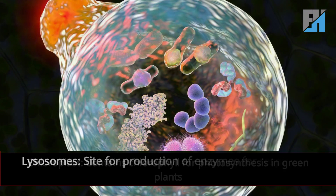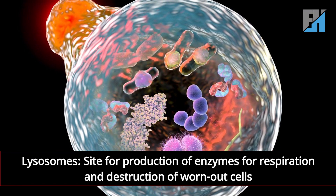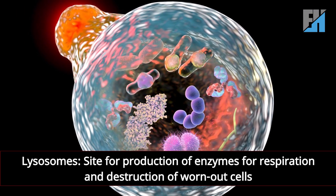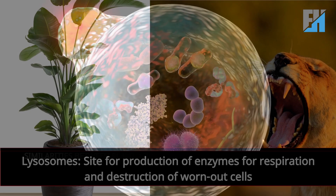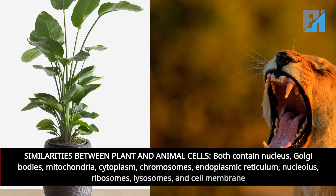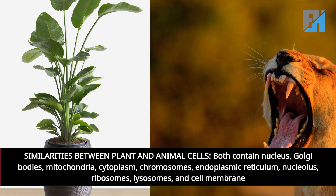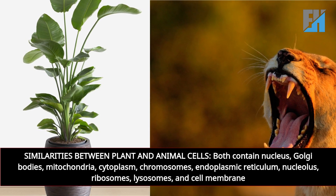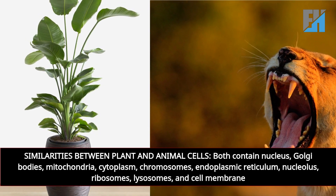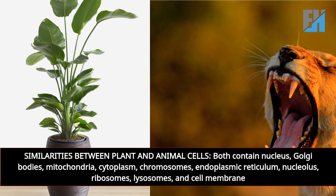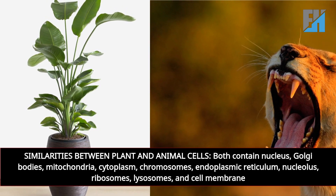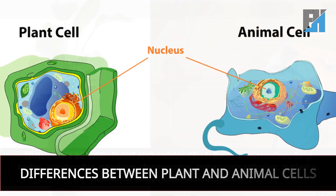Golgi bodies (or Golgi apparatus) synthesize, package, and distribute materials. Chloroplasts contain chlorophyll for photosynthesis in green plants. Lysosomes are sites for production of enzymes for respiration and destruction of worn-out cells. Both plant and animal cells contain a nucleus, Golgi bodies, mitochondria, cytoplasm, chromosomes, endoplasmic reticulum, nucleolus, ribosomes, lysosomes, and a cell membrane.